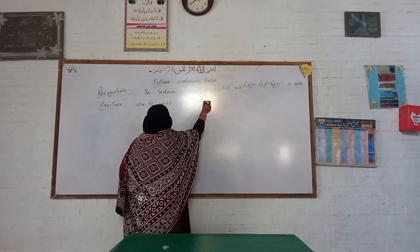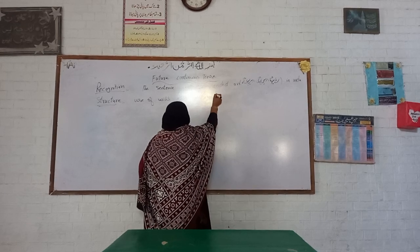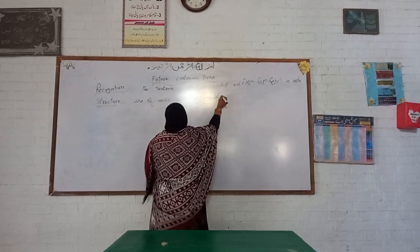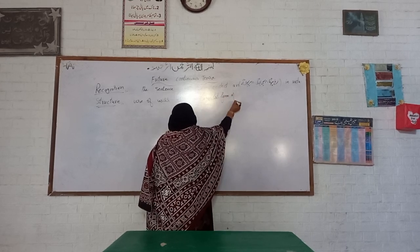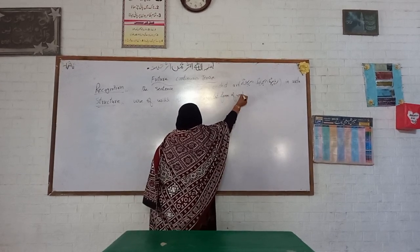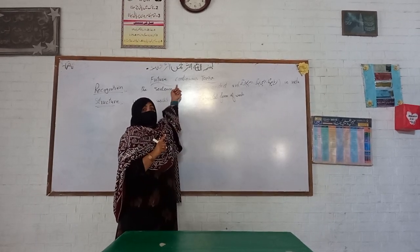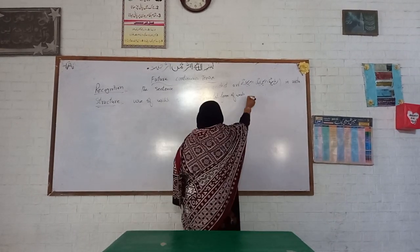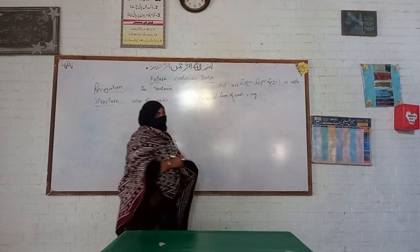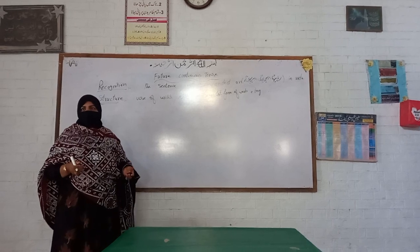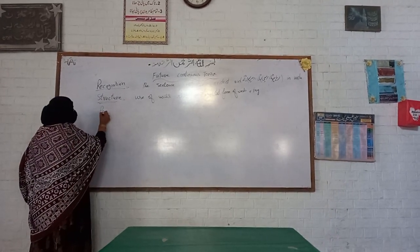We choose 'be', and then we add the first form of the verb with the addition of 'ing', because continuity is there. So the structure is: Subject + will/shall + be + first form of verb + ing. We will follow this structure.